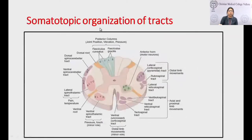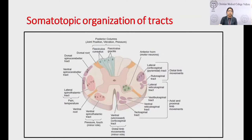The somatotopic organization of the tracts is the most important concept. In the spinothalamic tract, cervical fibers are medial and sacral fibers are lateral. Similarly, in the corticospinal pyramidal tract, cervical fibers are medial and sacral fibers are lateral. This organization allows us, during clinical examination and history, to determine which part of the cord is affected and whether the lesion is progressing from lateral to medial or arising intrinsically.